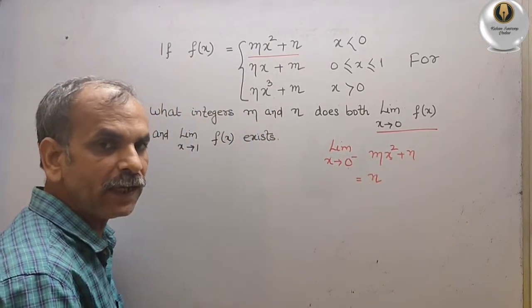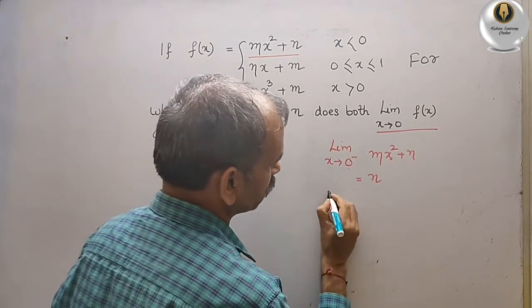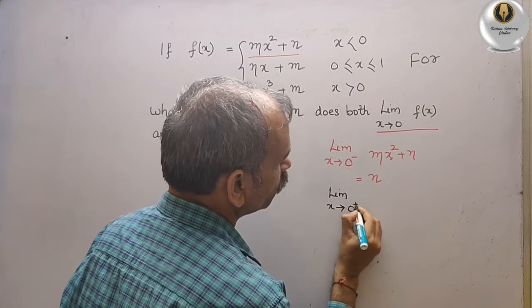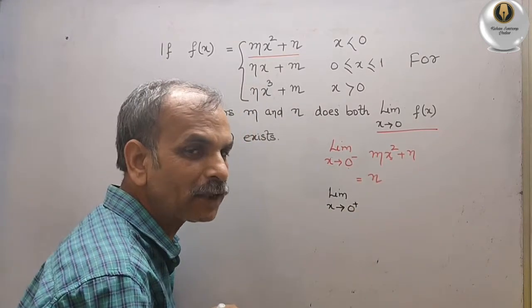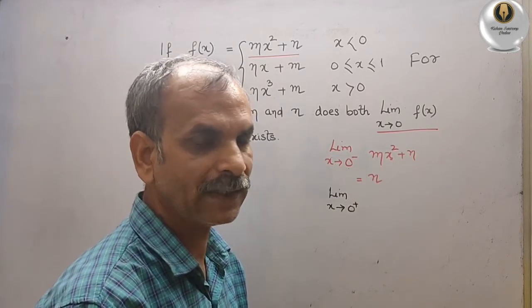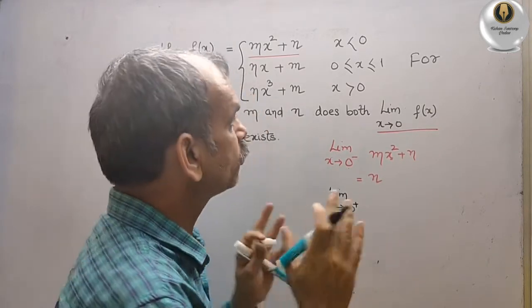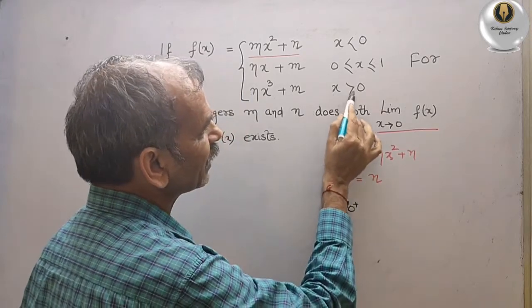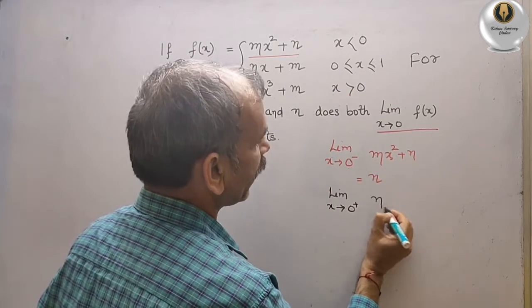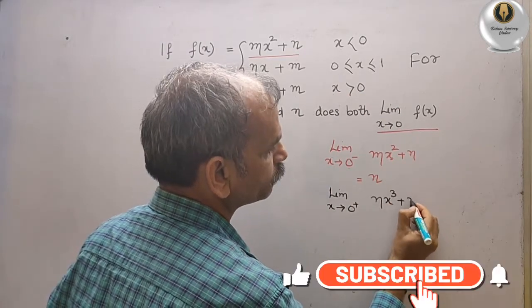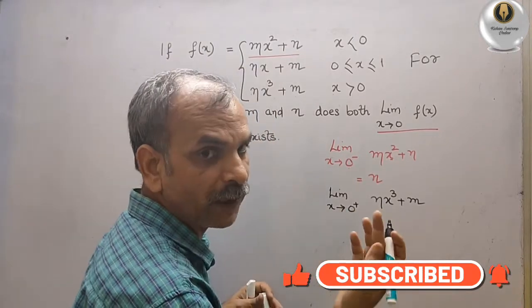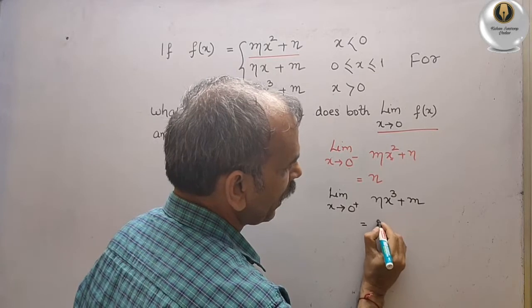Next, we will take limit x tends to 0 plus. Zero plus means x is greater than 0. They have already told x is greater than 0, so we take that value: nx³ + m. Now substitute 0 here — we will get m.